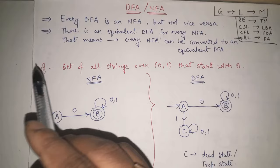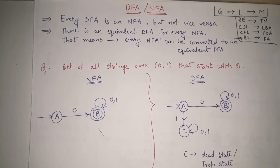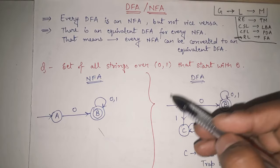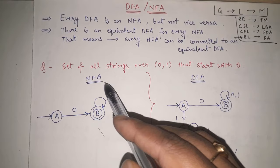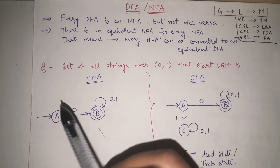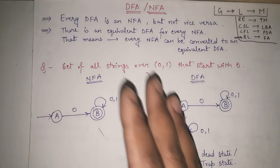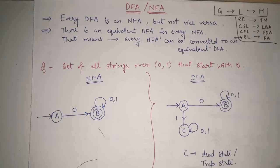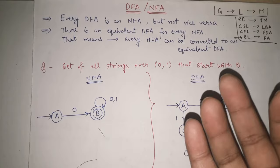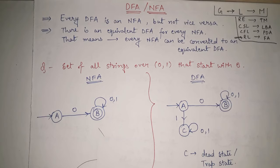There is an equivalent DFA for every NFA — meaning every NFA can be converted into an equivalent DFA. If any DFA is given, it is both a DFA and an NFA. But if an NFA is given, I cannot directly call it a DFA; however, I can convert it into an equivalent DFA. Now let's look at specific differences between NFA and DFA.